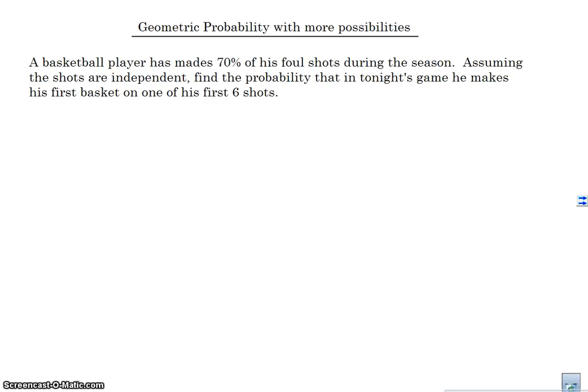We've looked at problems that said a geometric probability on the first success or your first success on a certain trial. Well, these are geometric probabilities in which you have your first success on one of N trials. And this is a little bit different and I'm going to show you how to do it both by hand and then also using the calculator and using the TI Inspire.